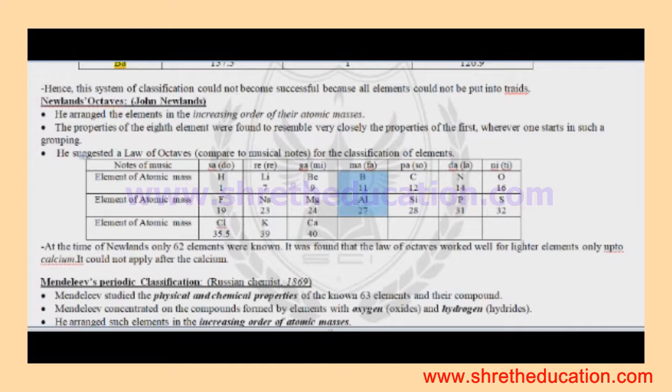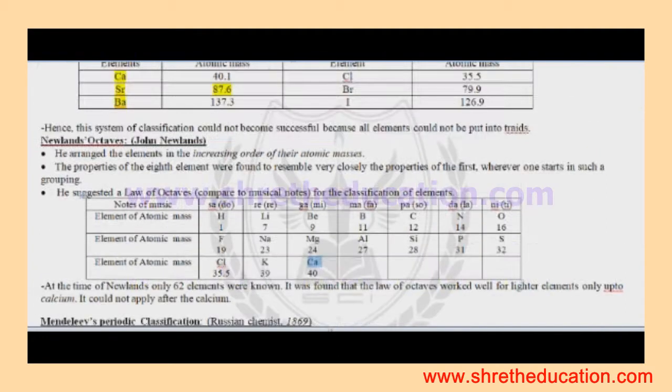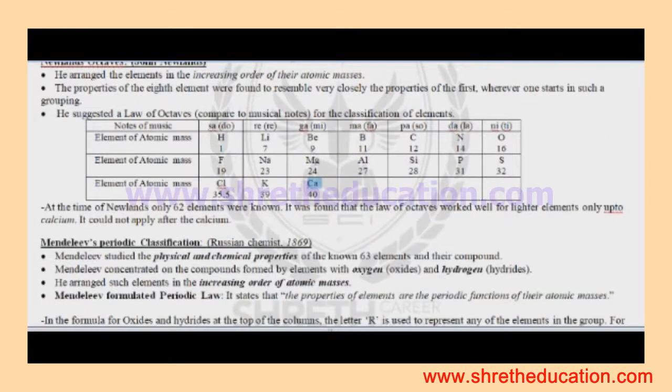The elements arranged by properties similar to musical notes. Newland's classification. Around 62 elements were already known. After calcium, the elements didn't fit the classification. So Newland's classification didn't work out.